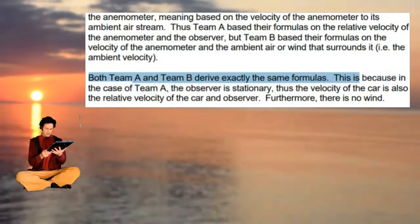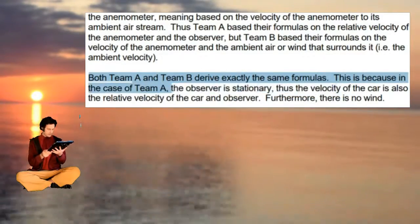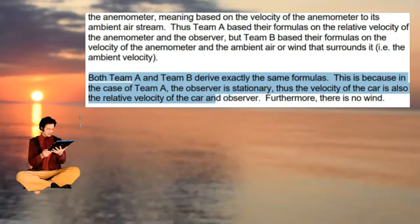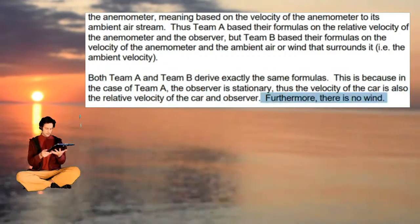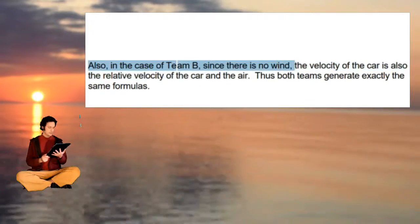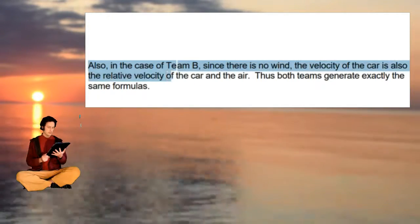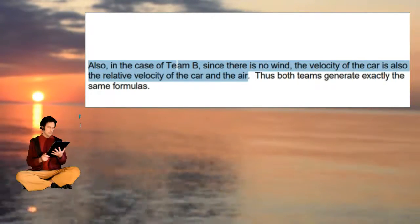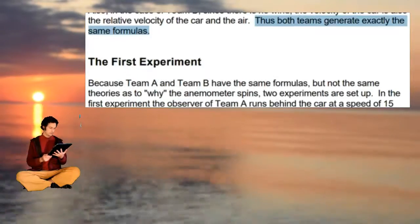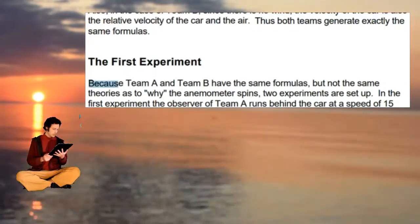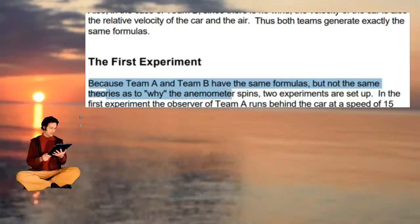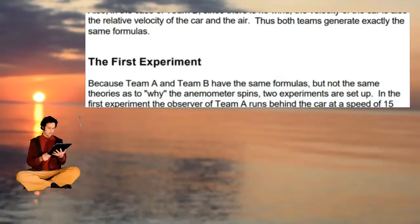Both Team A and Team B derive exactly the same formulas. Team A based their formulas on the relative velocity of the anemometer and the observer, while Team B based theirs on the velocity of the anemometer and the ambient air surrounding it. Both teams generate identical formulas because the observer is stationary and there is no wind, so the velocity of the car equals the relative velocity in both frameworks. To test their differing theories, two experiments are set up.